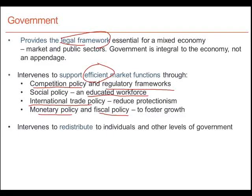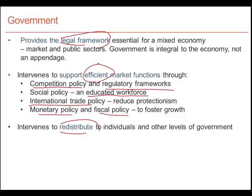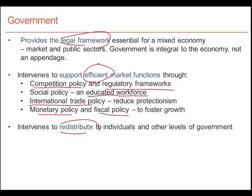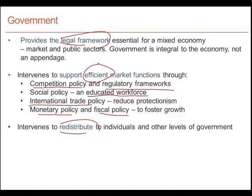The third major way in which the government intervenes in the economy is to ensure that there is a degree of equity. To that end, the government redistributes to individuals and to other levels of government. For example, people who are unemployed receive employment insurance. People who are working are required to contribute to the Canada or Quebec pension plan, and they receive a pension when they retire. The government also redistributes through social assistance, also known as welfare.